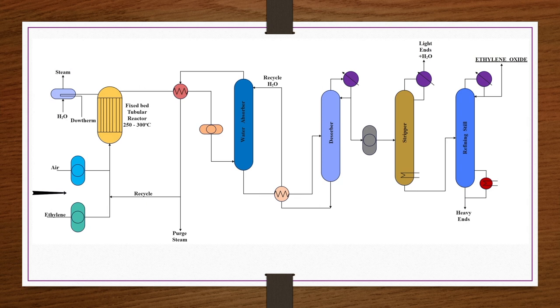Since ethylene glycol is produced from ethylene oxide, we first recapitulate the ethylene oxide production flowchart from the previous lecture. Ethylene and air (or oxygen) are mixed and compressed, then sent to a tubular reactor — a bundle of tubes packed with silver oxide catalyst and promoters. The tubes are enclosed in a shell, and heat transfer fluids (Dowtherm) circulate in the interstitial space to control reaction temperature below 250 to 300°C.